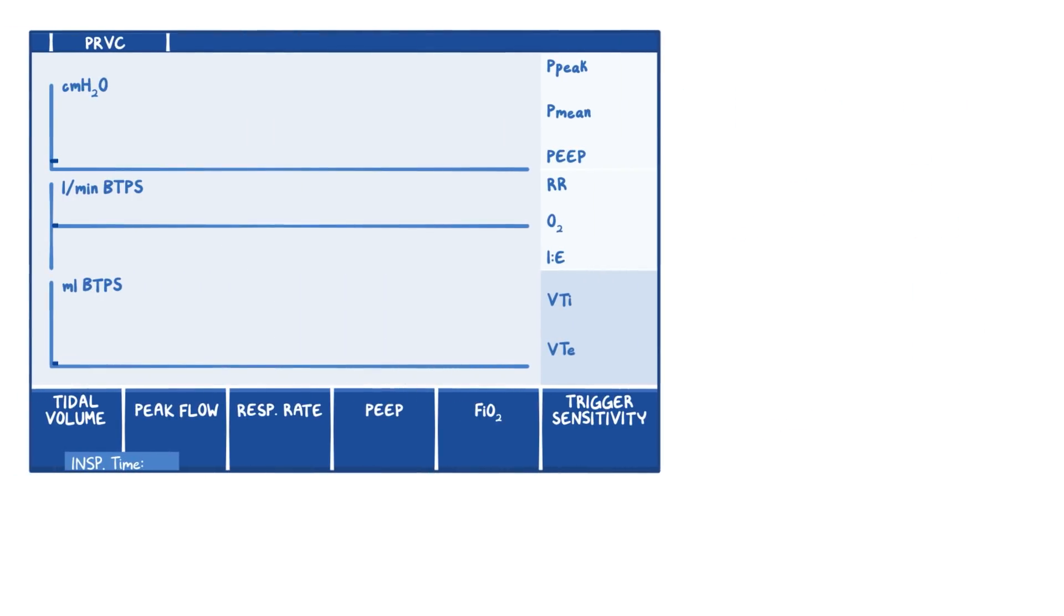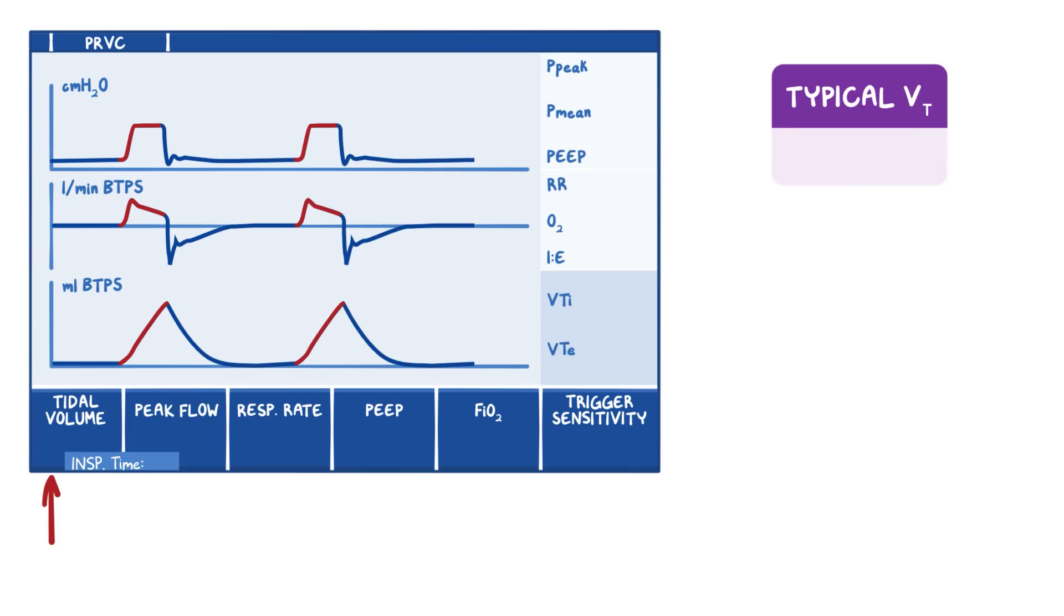First, select the tidal volume, or VT, we want to deliver. The typical initial VT is 6 to 8 mL per kg. Let's say our patient is 60 kg, so let's start with 7 mL per kg and set our tidal volume at 420 mL.